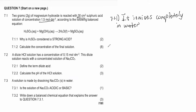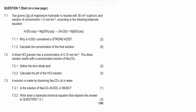Question 7.1.2 (8 marks) asks us to calculate the concentration of the final solution. Note that two grams of magnesium hydroxide is reacted with 30 cm³ of sulfuric acid — a strong acid — so the final solution will be acidic. That means sulfuric acid is in excess, and since it is a diprotic acid, it produces two hydronium ions, impacting the pH. Magnesium hydroxide is the limiting reagent.